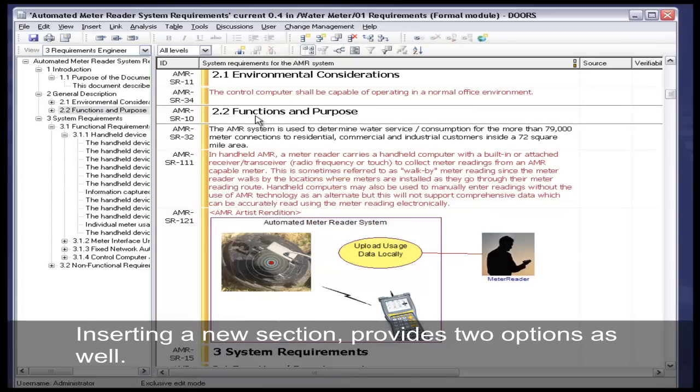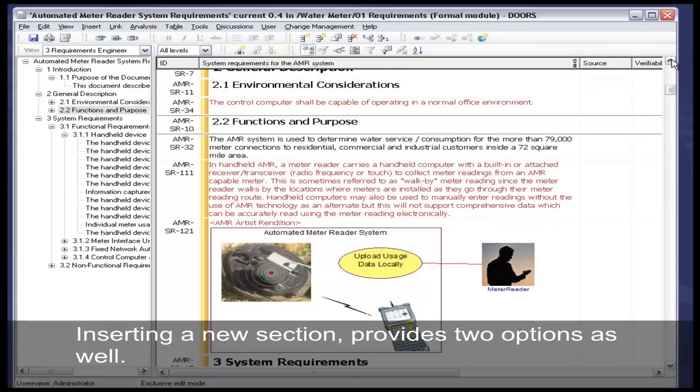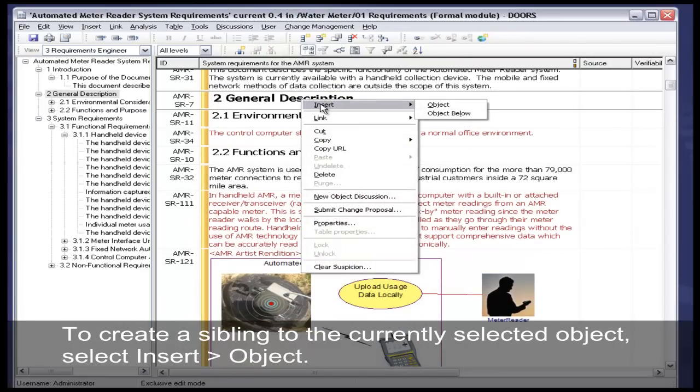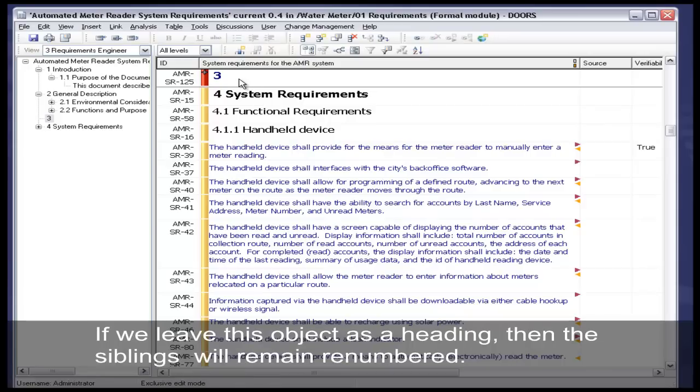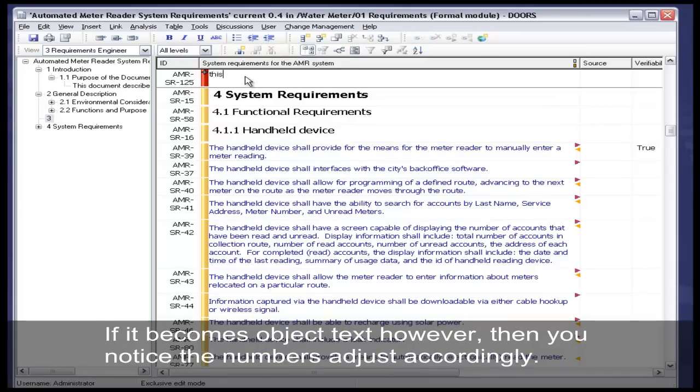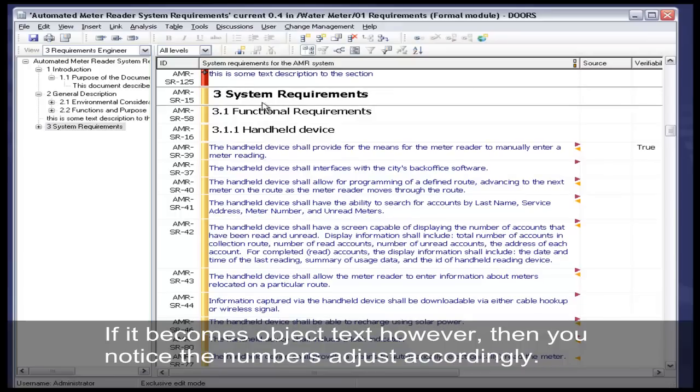Inserting a new section provides two options as well. To create a sibling to the currently selected object, insert object. Notice that we just created a new section 3, and the old 3 system requirements is now renumbered to 4. If we leave this object as a heading, then the siblings will remain renumbered. If it becomes object text, however, then you notice the numbers adjust accordingly.